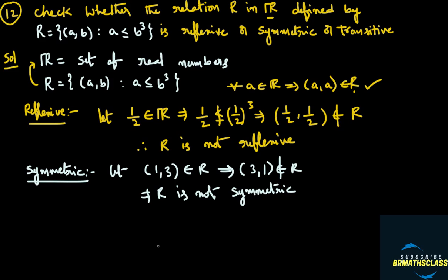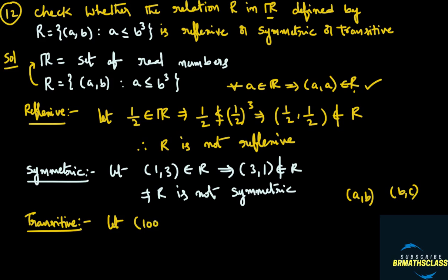Now we need to check whether the relation is transitive. To check transitivity, we take a pair of ordered pairs of the form (a, b) and (b, c) from the relation. I will take the example: ordered pair (100, 5) belongs to the relation and ordered pair (5, 2) belongs to the relation. Notice this ends with 5 and this starts with 5 — such a pair of ordered pairs I have chosen.